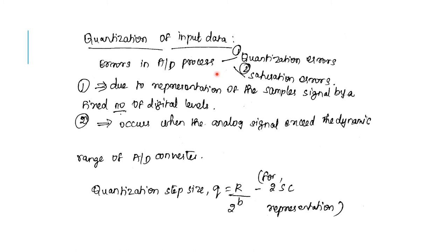There are two types of errors basically produced in the A to D conversion process: quantization errors and saturation errors. Quantization errors are due to the representation of the sampled signal by a fixed number of digital levels. The saturation error occurs when the analog signal exceeds the dynamic range of the A to D converter.